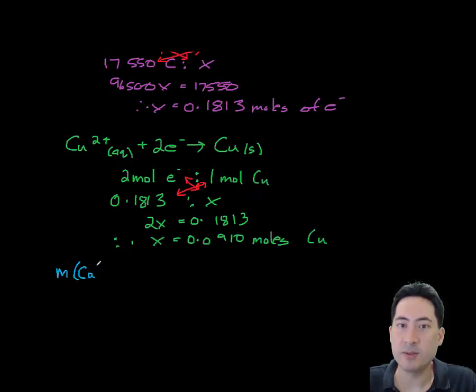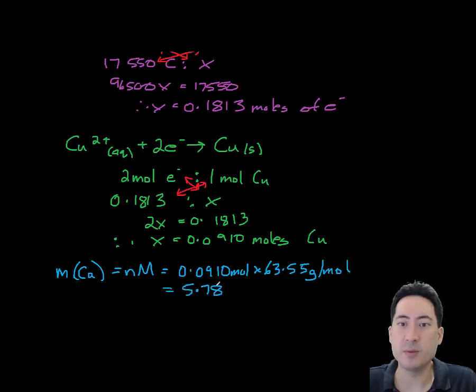Go back to our mass stoichiometry. Number of moles is mass. Mass equals number of moles times molar mass. And that gives us a final value of 5.78 grams of copper.